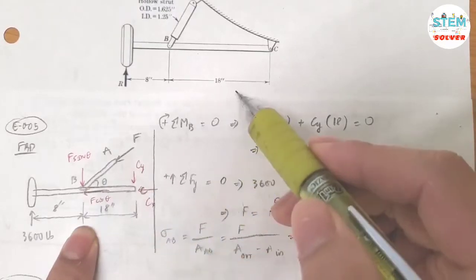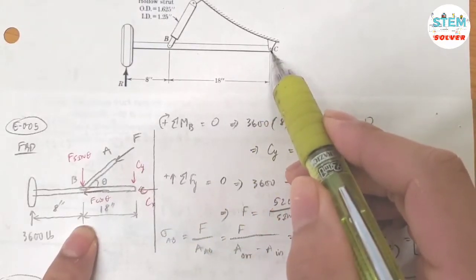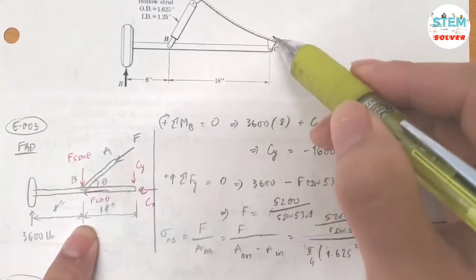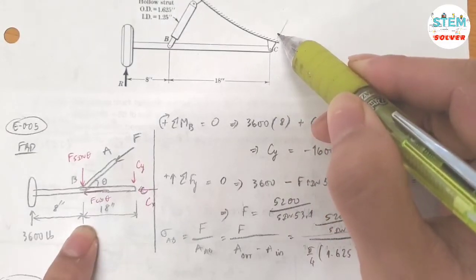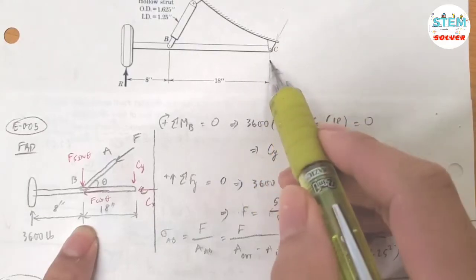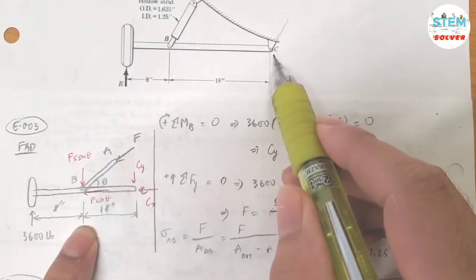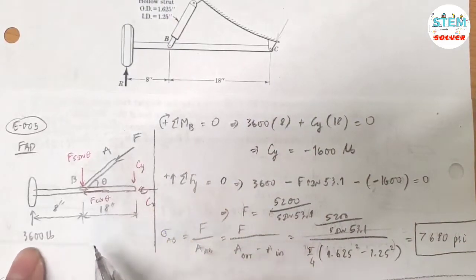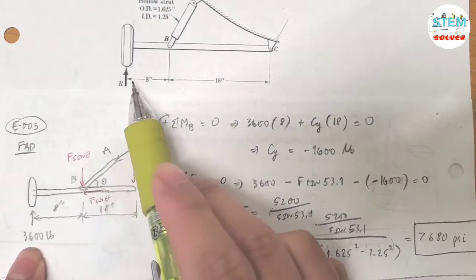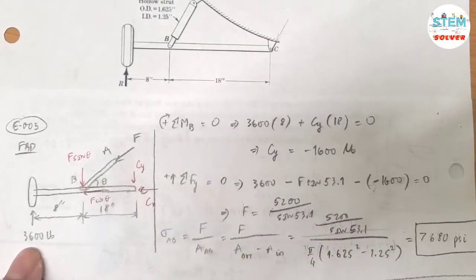And at C, you see that we have a pin joint, so there's also another force acting on this one, acting on it like this. And we also need to break this down into X, Y components, which is why I have Cx and Cy here. And don't forget the reaction force at the wheel, which is 36,000 pounds.